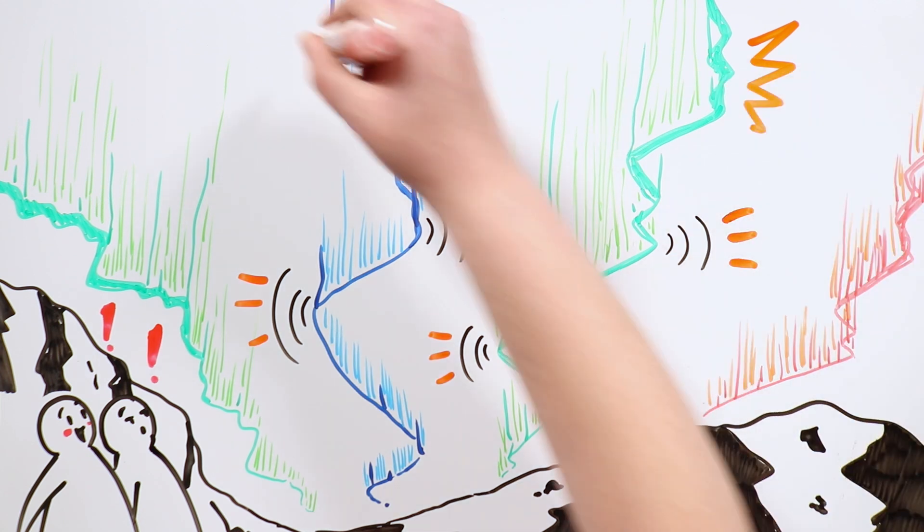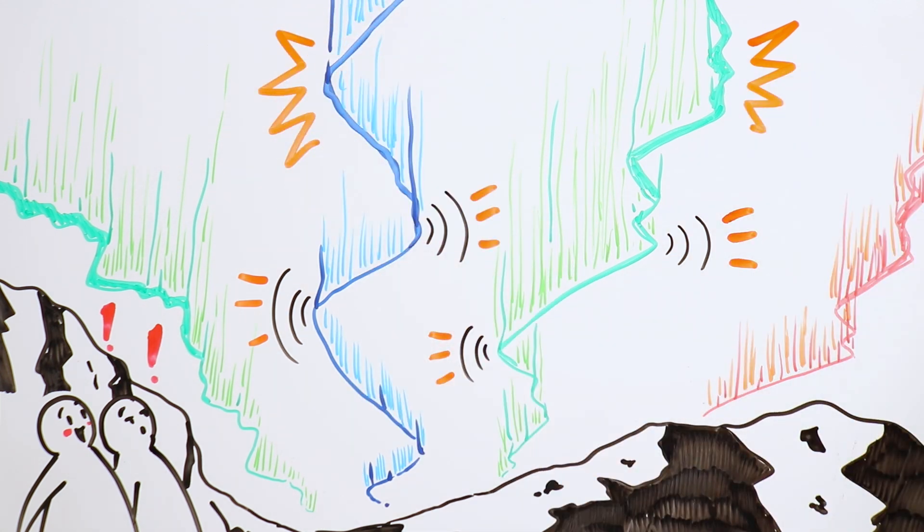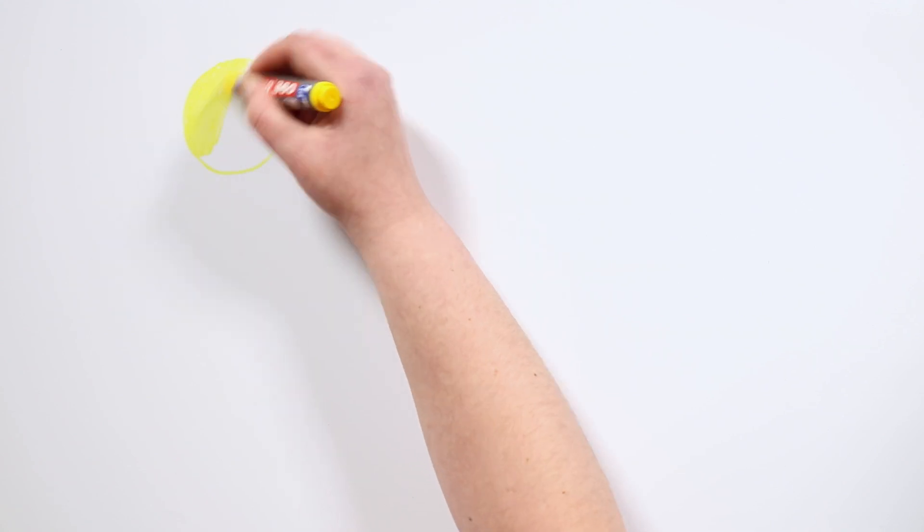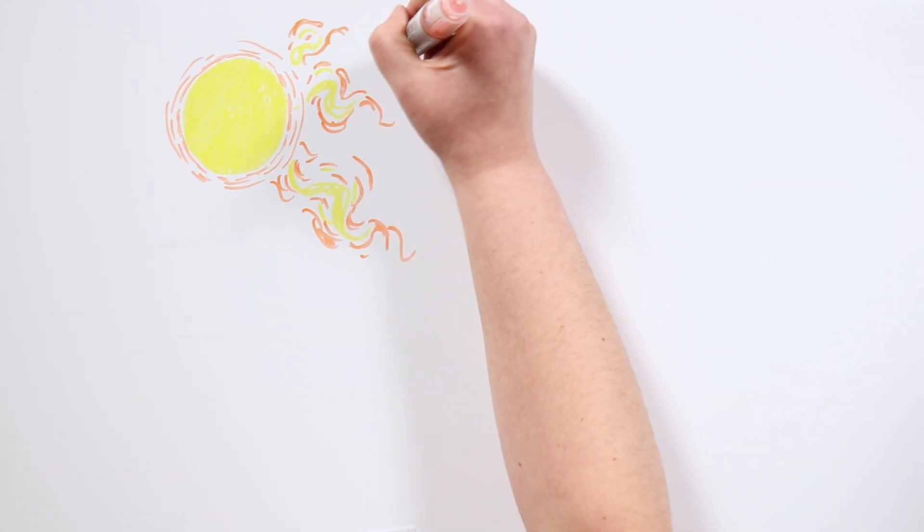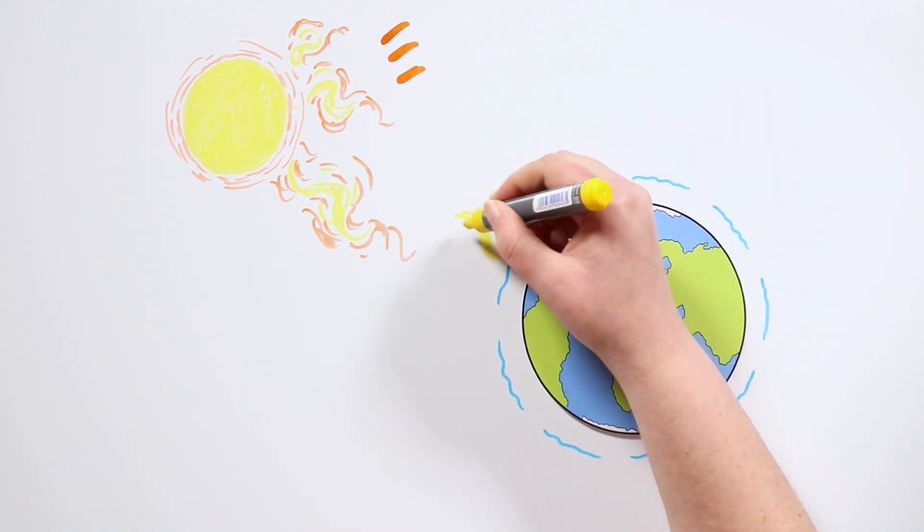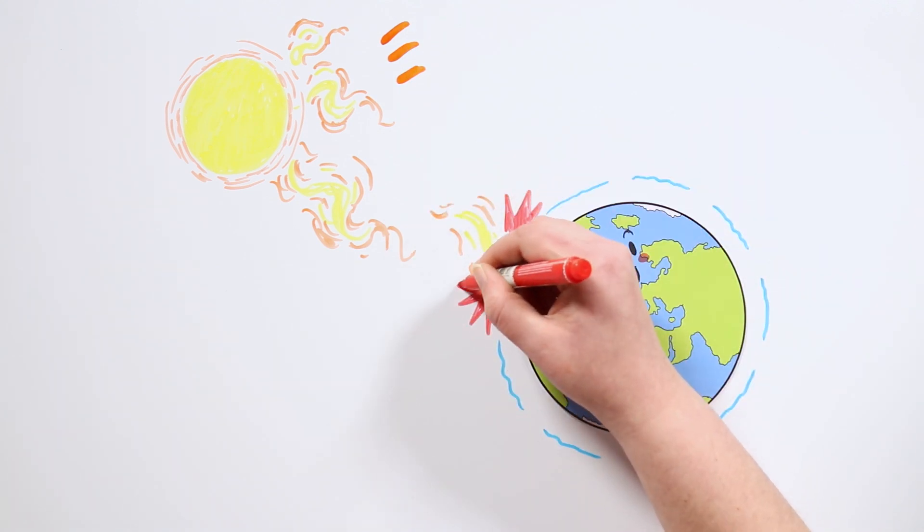But in reality, these are caused by our favorite star, the Sun. The Sun is continually emitting particles in a stream of energy known as solar wind. When the stream reaches the Earth, it crashes with the atmosphere, trapping the particles.